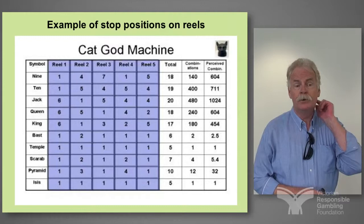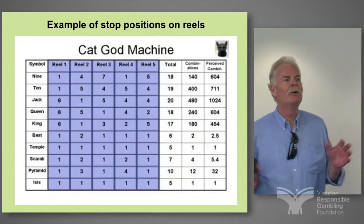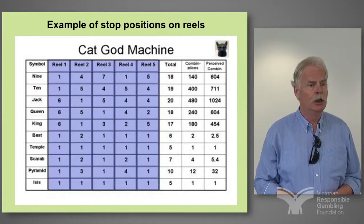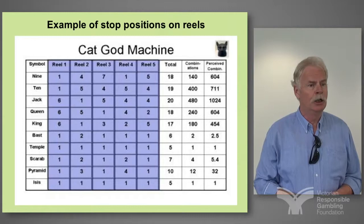And there's a term called 'dithering', which applies to machines where they can swap the array of occurrences across reels at random. We don't have dithering in Victoria — it's not allowed — but we do certainly have puffing and starving, because that's part of the house edge. Thank you very much, thanks for your attention, hope you've got something out of it.